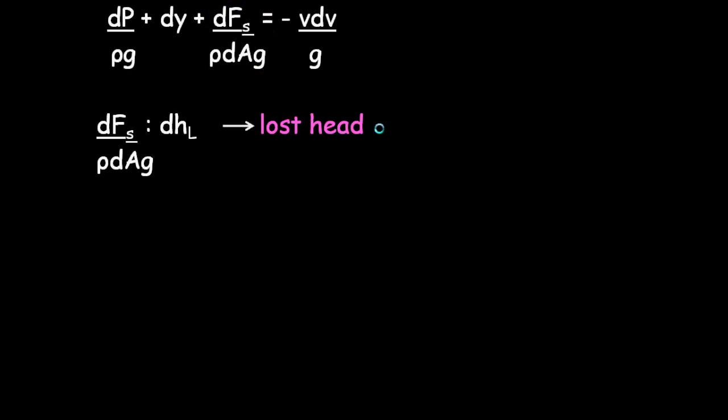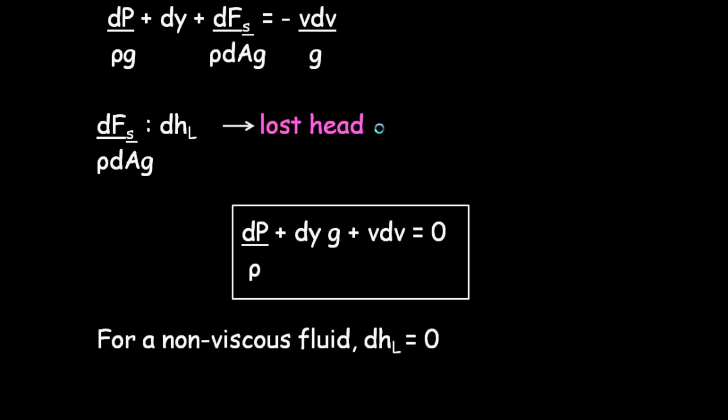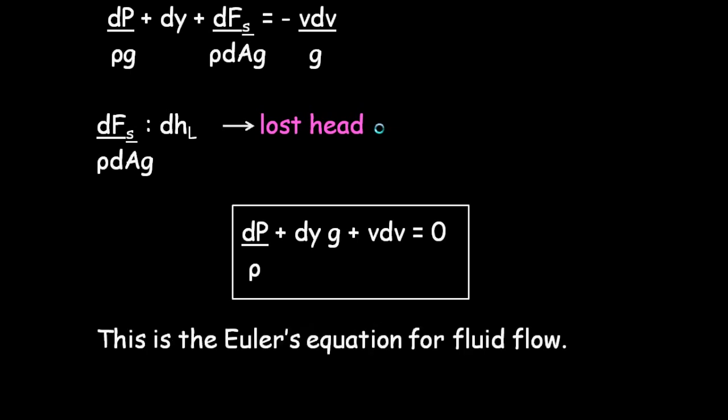This term represents the resistance to flow in the length dl and is a measure of energy loss due to flow. But for an ideal fluid, viscosity is zero, so dhl becomes zero, and we get Euler's equation for the fluid flow.